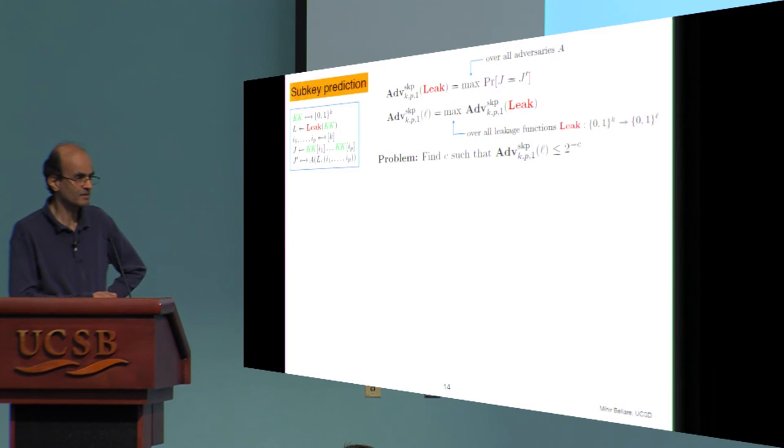You also pick some random probes into the key. That means indices here in the range 1 through k, p of them, and look at the corresponding bits of the key and call that j.